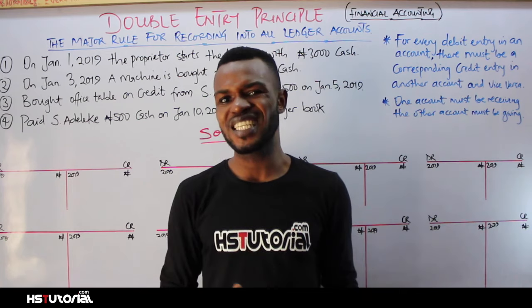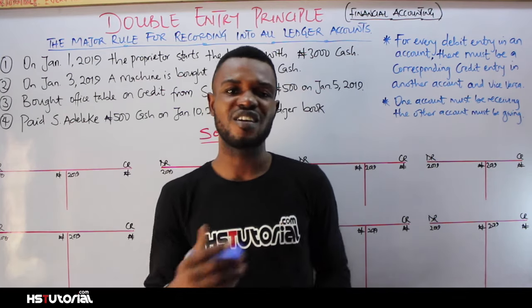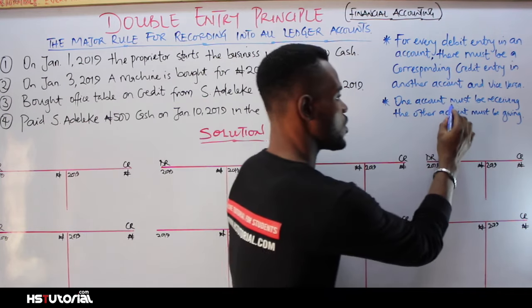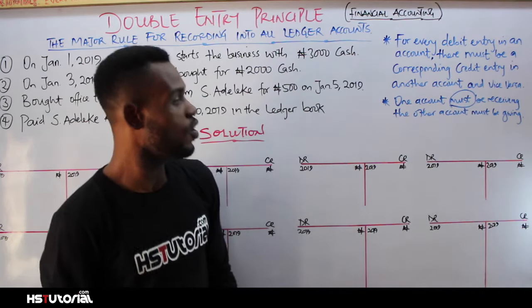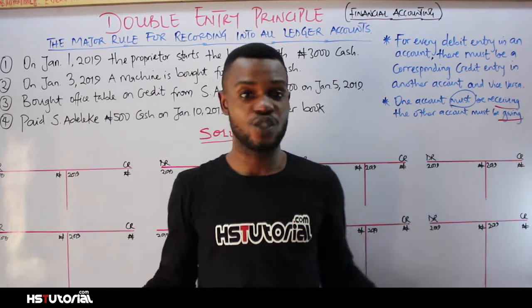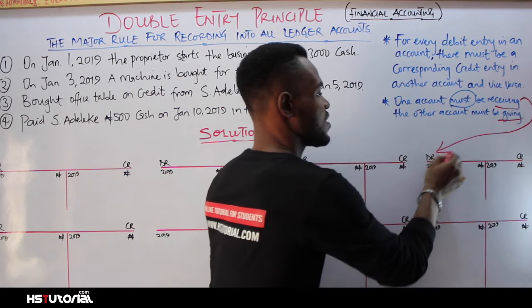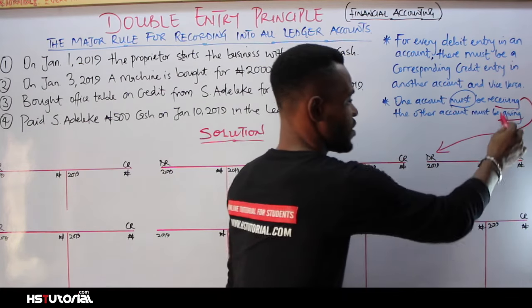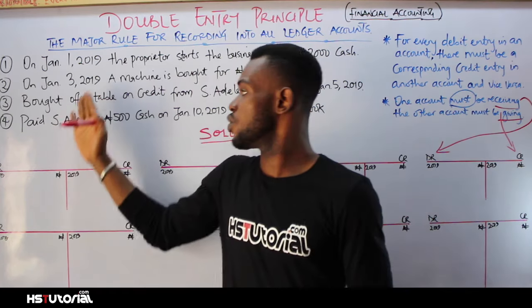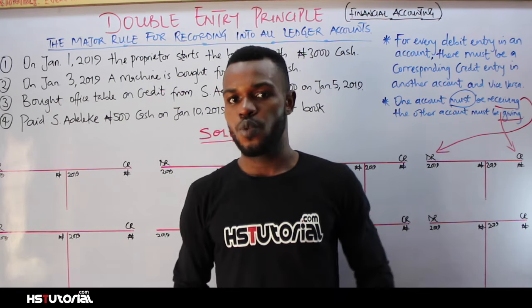Before we get started, there is something you need to understand. The law states that for every debit entry, there will be a corresponding credit entry. What does that mean? It simply means there must be one account receiving and another account giving out. That is why in the cash book, we have a debit side and a credit side. The debit side is always known as the receiving side, while the credit side is always known as the giving side. Understanding this concept will help you treat any questions under the ledger account.